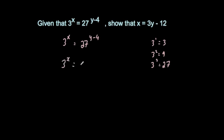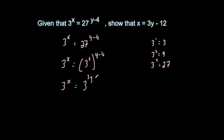Since 27 is the same as 3 cubed, we rewrite: 3 to the power of x equals 3 cubed, all to the power of y minus 4. This is a power of a power, so we multiply the powers: 3 times y is 3y, and 3 times negative 4 is minus 12. So 3 to the power of x equals 3 to the power of 3y minus 12. Since the bases are equal, the powers must match, giving x equals 3y minus 12. Proved.